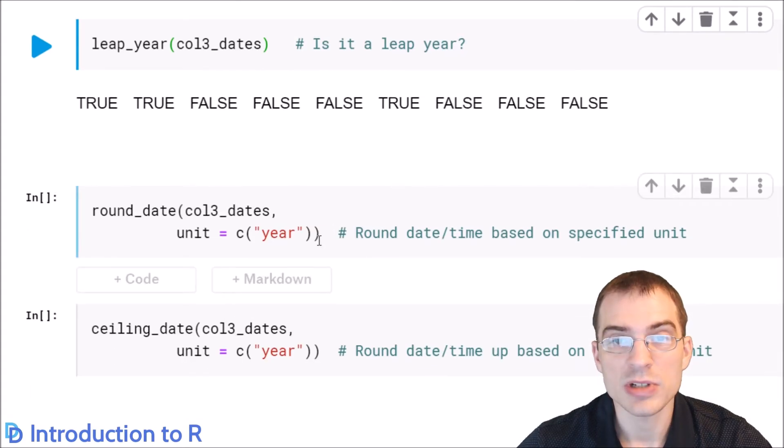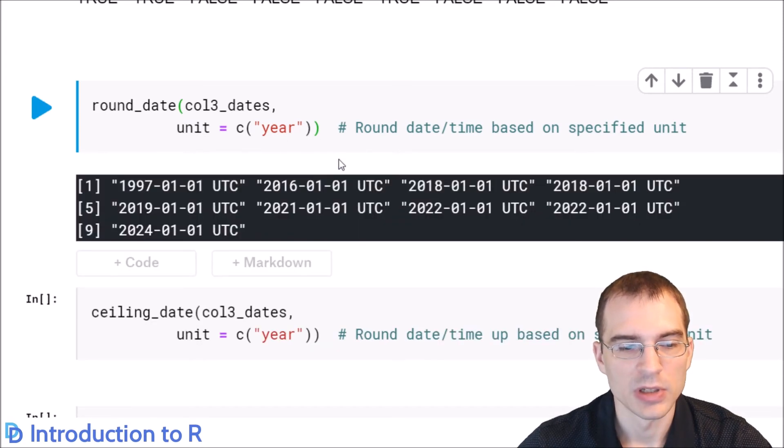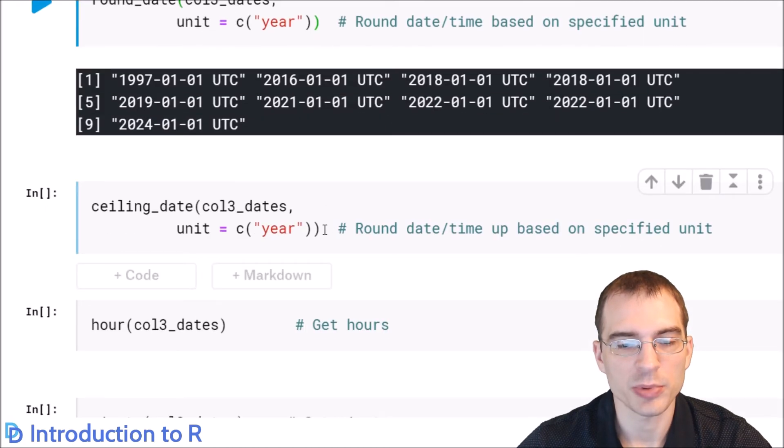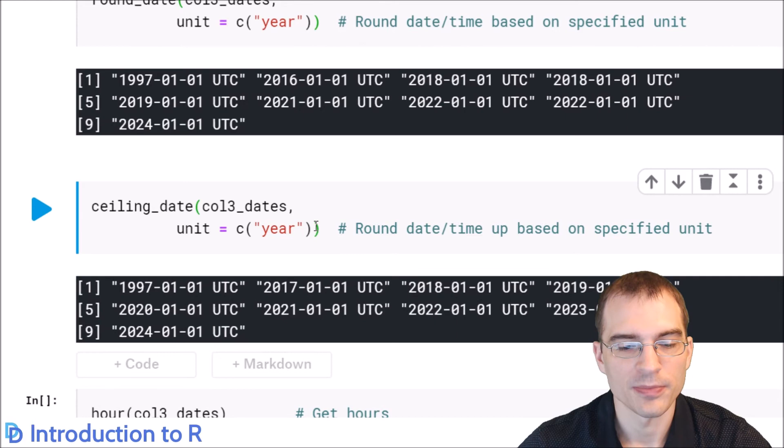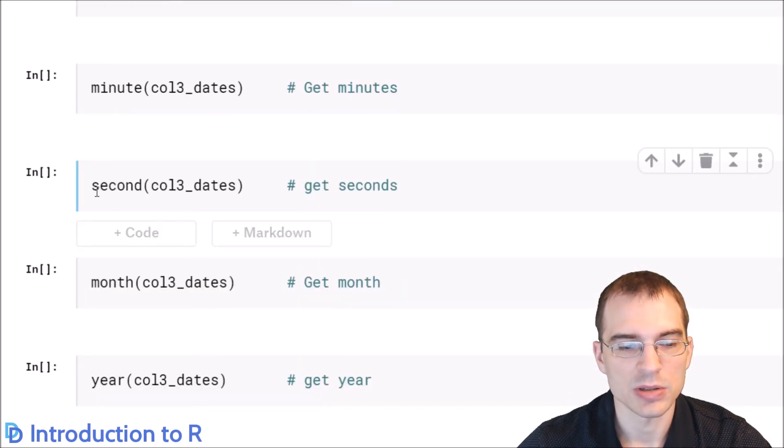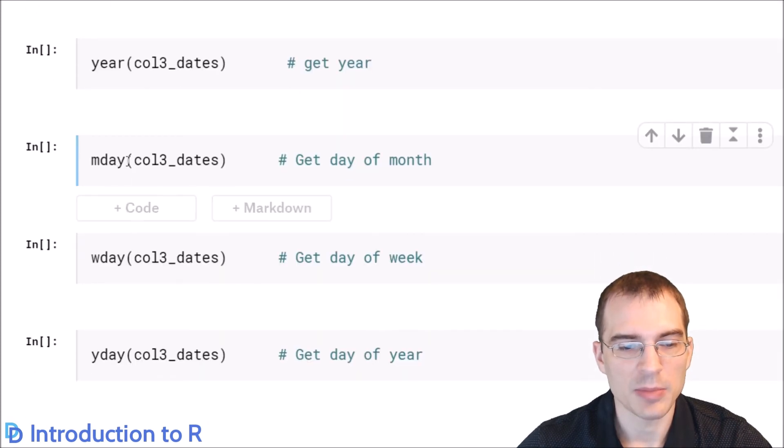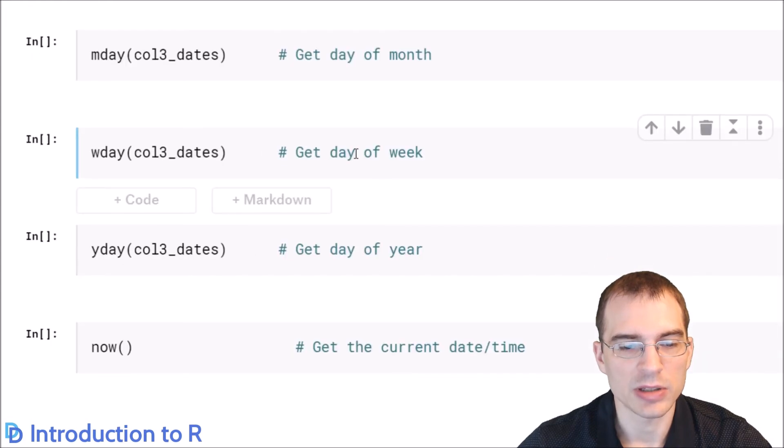You can round dates to a certain unit of time. For instance, you can run round_date and say the unit is year, and it will round to the nearest year. Similarly, there's ceiling_date to round dates up to the next highest of the specified unit. You can run hour to get the hours, minute to get the minutes, second to get the seconds, month for month, year for year. Mday will get the day of the month. Wday will get the day of the week. Yday will get the day of the year.